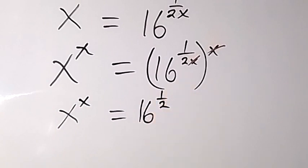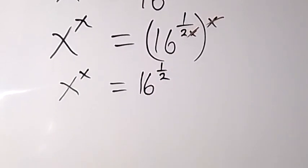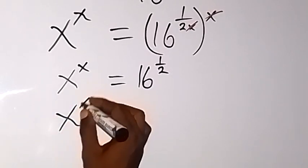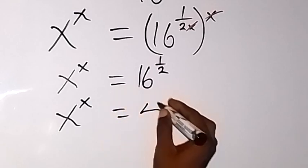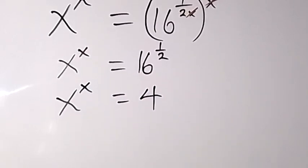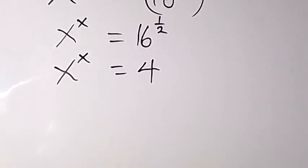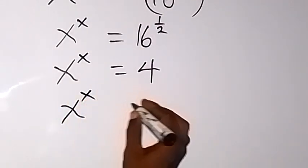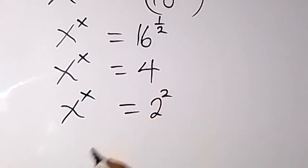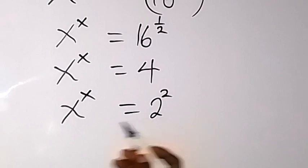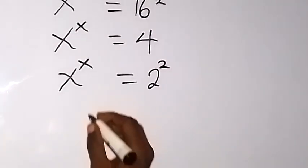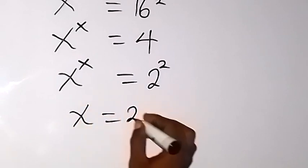And 16 raised to power half is the same as the square root of 16, and the square root of 16 is 4. So we have x raised to power x equals to 4. We can express 4 as 2 raised to power 2, giving us x raised to power x equals 2 raised to power 2. The bases are the same and the powers are the same, therefore we can conclude that x is equal to 2.